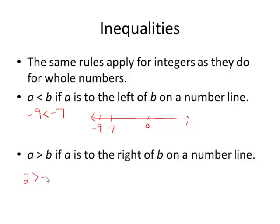For instance, 2 is greater than negative 4 because on the number line, 2, which is 2 units to the right of 0, is farther to the right than negative 4, which would be 4 units to the left of 0.